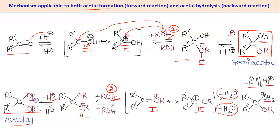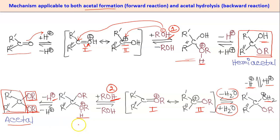The same mechanism applies with the second ROH molecule: oxygen is protonated and one H is removed as H⁺. Finally, we get the acetal — two OR groups coming from the alcohol and the central part coming from the carbonyl compound, whether aldehyde or ketone.